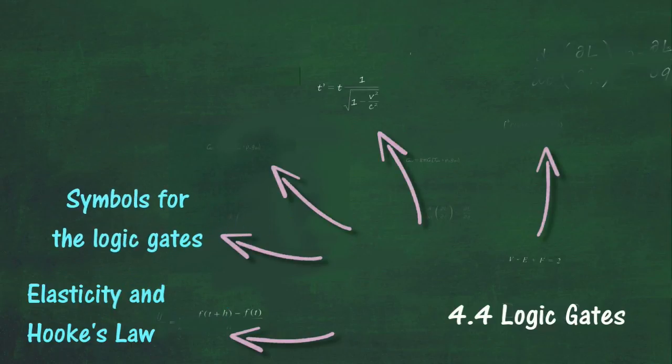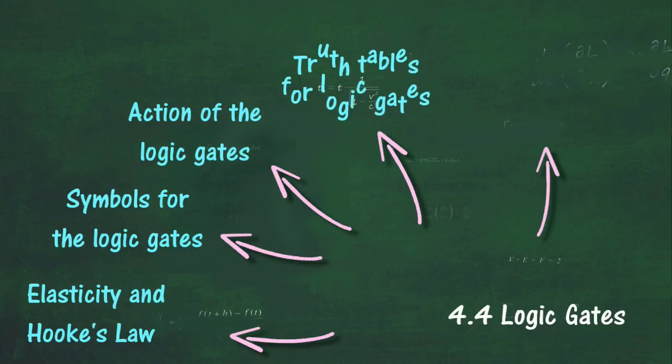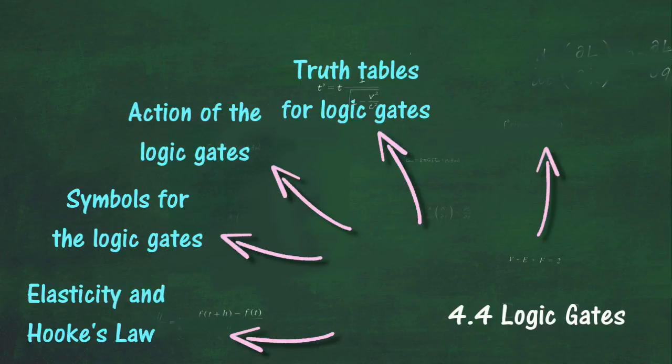List and draw symbols for the logic gates AND, OR, NOT, NOR, and NAND. State the action of the logic gates in a truth table. Build truth tables for logic gates in combination for a maximum of two inputs. Describe applications of logic gate control systems.